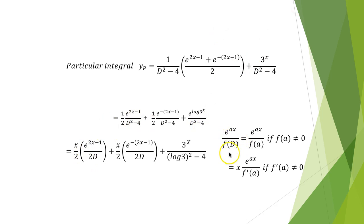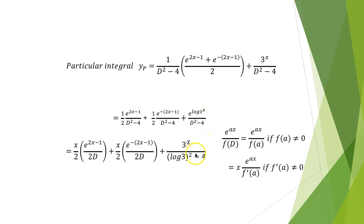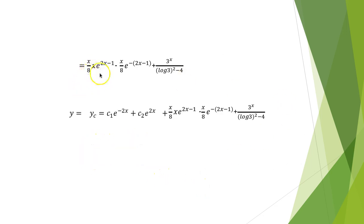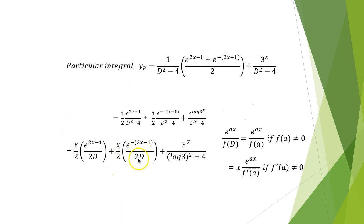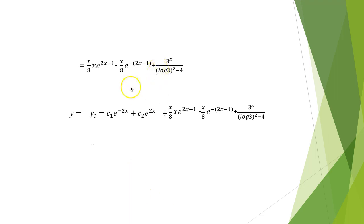Using the formula e^(ax)/f(D) = e^(ax)/f(a): here f(a) with a=2 gives f(2) = 0, so we use the repeated root formula x·e^(ax)/f'(D). This gives (x/2)·e^(2x)·[1/(2D)] for the first term and (1/2)·e^(−2x)·[1/(2D)] for the second. Evaluating gives (x/8)·e^(2x−1) − (x/8)·e^(−2x−1) + 3^x / (ln3)² − 4.